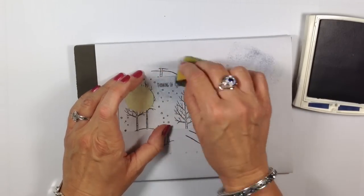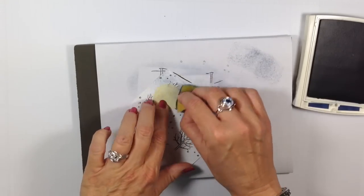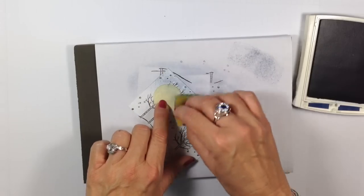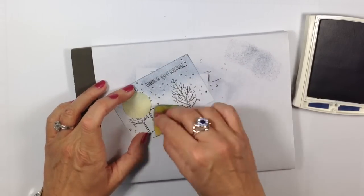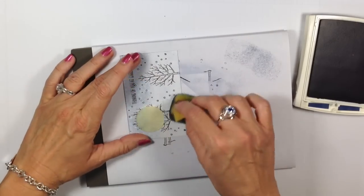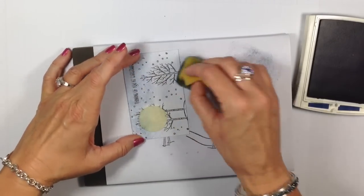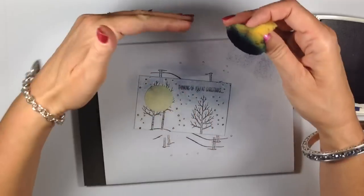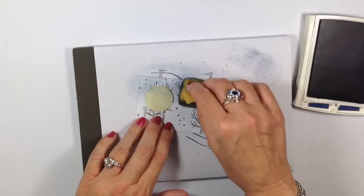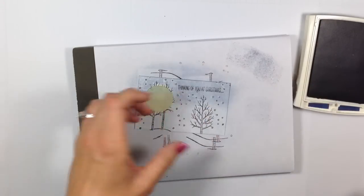Got that covered up so we protect that. I'm just tapping that Night of Navy ink on here. As I get down to the bottom I want to be just a little bit lighter, so I'm using a really light touch. I want it to cascade down a little bit in that color.